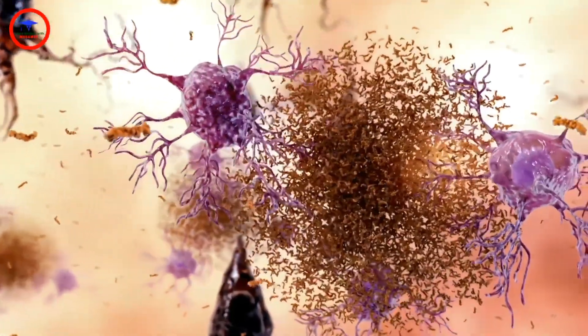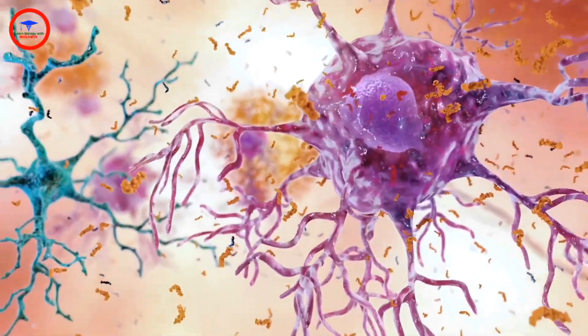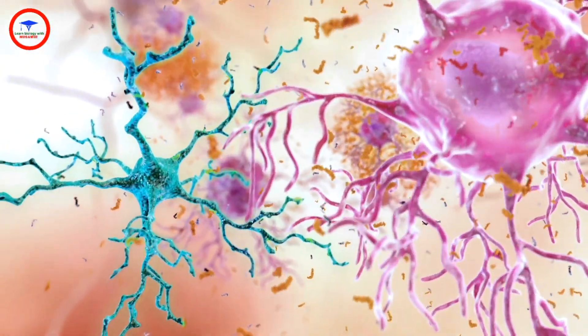Chronic inflammation sets in, as microglial cells fail to clear away debris, and astrocytes react to distressed microglia.